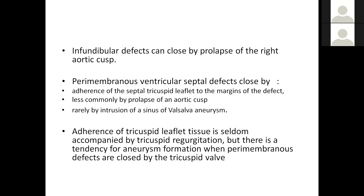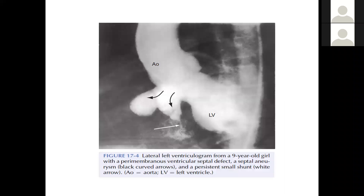Adherence of the tricuspid leaflet is seldom complete, but there is a tendency for aneurysm formation when a perimembranous defect is closed by a tricuspid leaflet. This angiogram shows the left ventriculogram of a nine-year-old child with a perimembranous VSD, where we can see a septal aneurysm and a small residual channel.